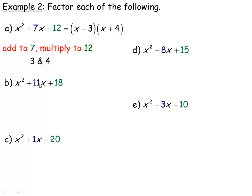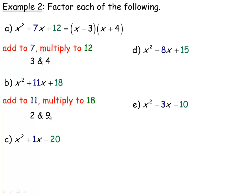Next: x squared plus 11x plus 18. We need to find two numbers that add to 11 and multiply to 18. Focus on the factors of 18 — there aren't that many pairs. The numbers we need are 2 and 9: they add to 11 and multiply to 18. Other pairs like 3 and 6 multiply to 18 but don't add to 11. So 2 and 9 are the numbers that work, and the factors are x plus 2 and x plus 9.